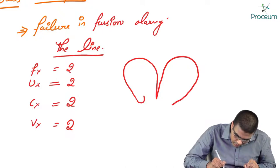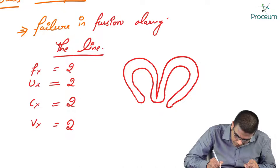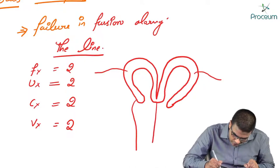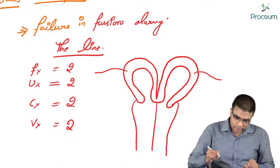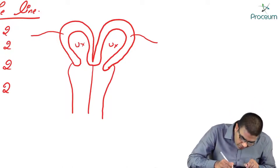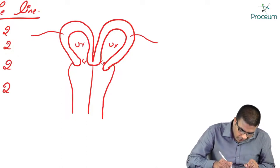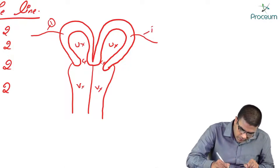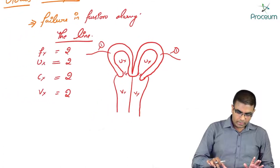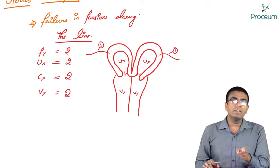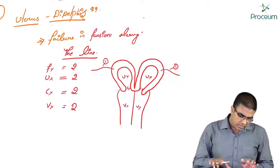Looking at the diagram: there are two uteruses, one and another; two cervixes; two vaginas; and two fallopian tubes. The key point is that uterus didelphys represents a complete failure of fusion along the line, resulting in two uteruses, two cervixes, two vaginas, and two fallopian tubes.